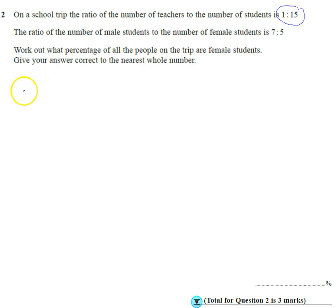So that means the total is 16 overall, not 16 people but in terms of 16 parts. So we know the teachers is equal to 1/16 of the total, which therefore means students are worth 15/16. 1 plus 15 is the 16.